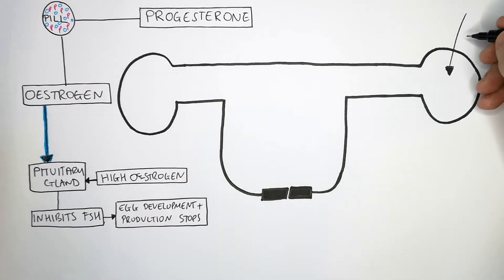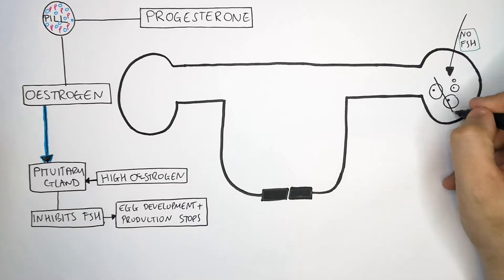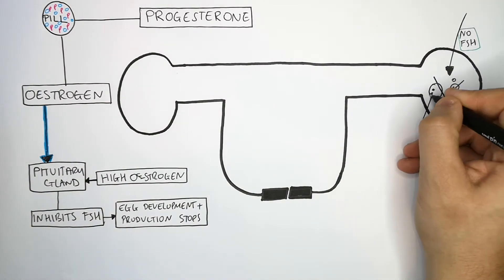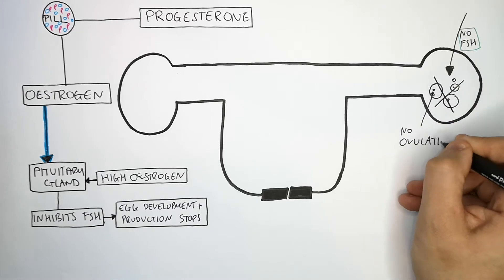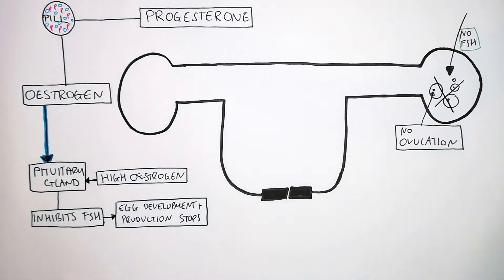Remember, high oestrogen levels will stop FSH. So there'll be no egg development as there'll be no FSH being produced. Therefore there'll be no ovulation of an egg to get fertilized. A sperm will not be able to fertilize something that isn't there.